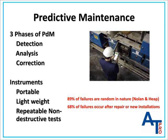Predictive maintenance programs use the machine's operating condition to determine when maintenance needs to be performed. The most effective programs recognize the three phases of predictive maintenance: detection, analysis, and correction.